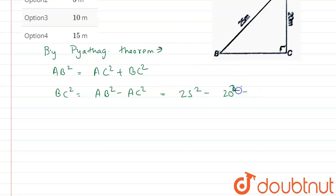We get 625 minus 400, because the square of 25 is 625. So here we get 225, and the square root of 225 is 15 meters.